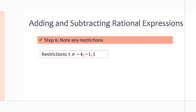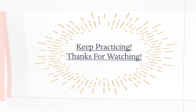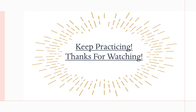The last step is to note all restrictions found throughout the question. From step 1, we found that t cannot equal negative 4, t cannot equal negative 1, and t cannot equal 1. We state them clearly at the end. That's the end of the question and the theory part of chapter 2. In the next video we'll do examples on addition and subtraction of rational expressions, and then move on to chapter 3. Thanks for watching, and always remember to keep practicing.